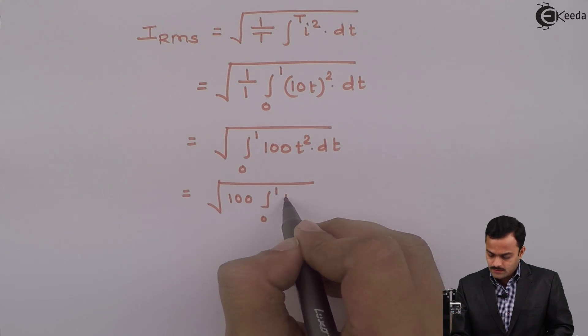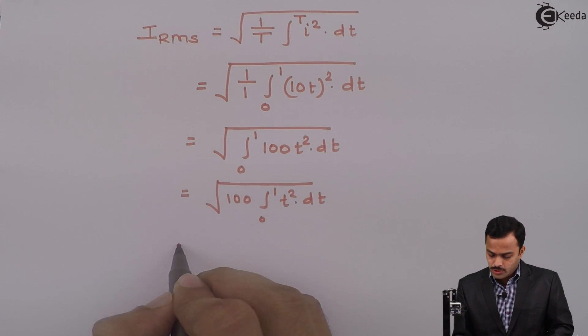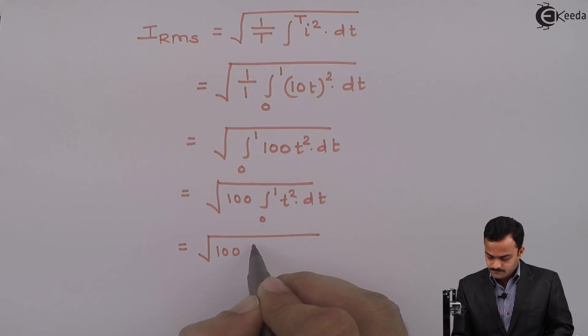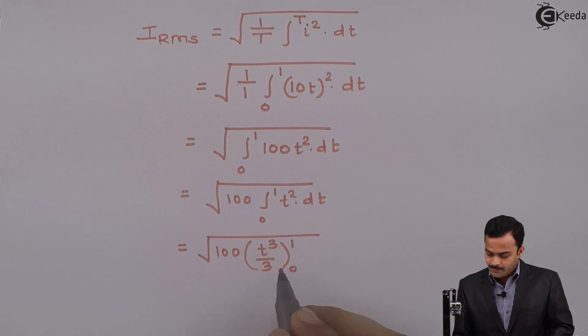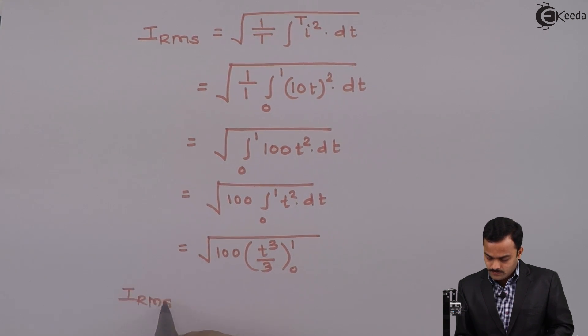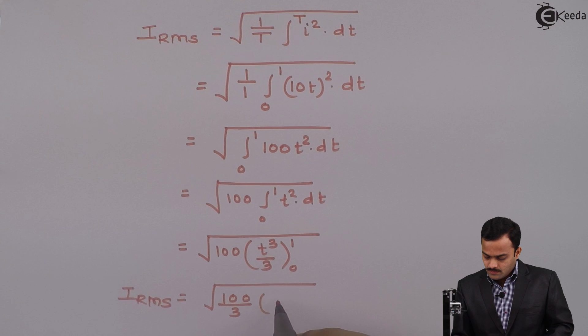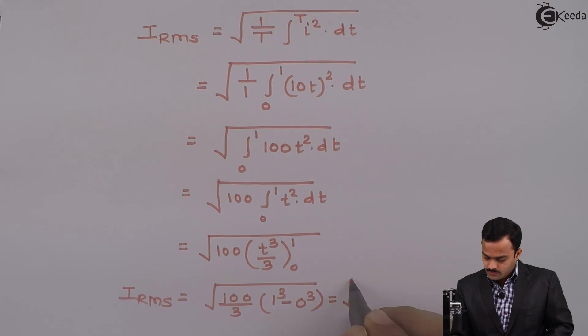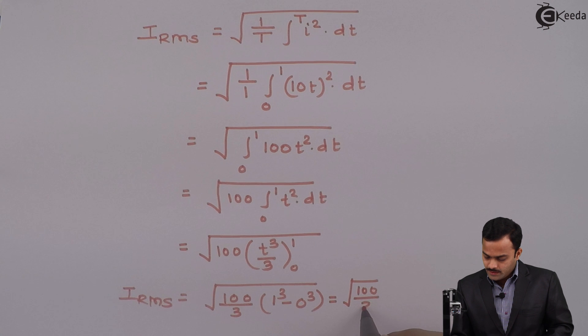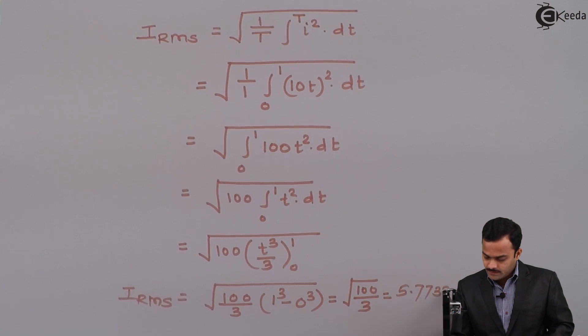Finally, I will get integral 0 to 1, t² dt. We know integration of t² is t³/3. Limits are 0 and 1. If I apply the limits, I_RMS equals root 100/3 (1³ - 0³). Ultimately, it is root 100/3. If I solve, I_RMS is 5.7733 ampere.